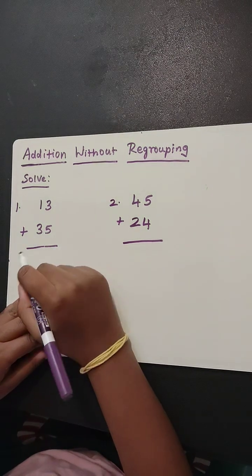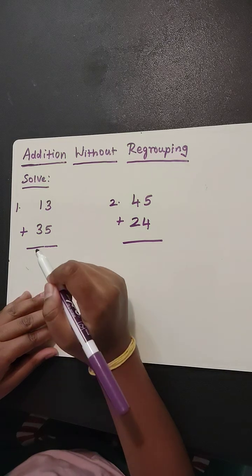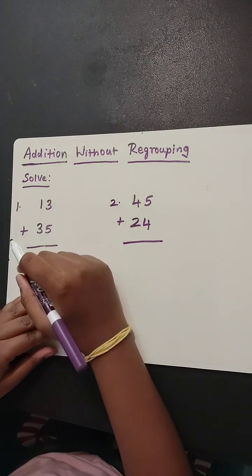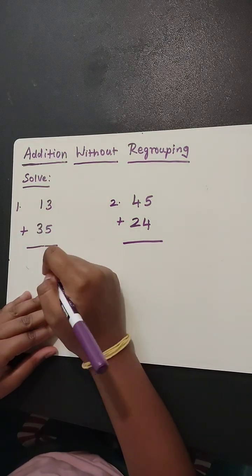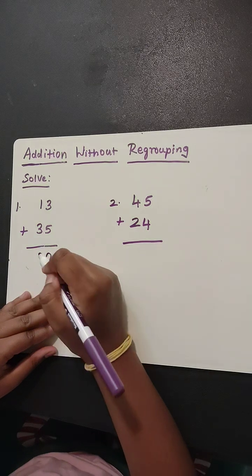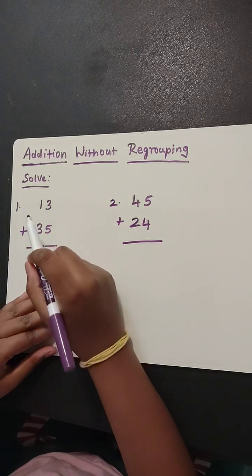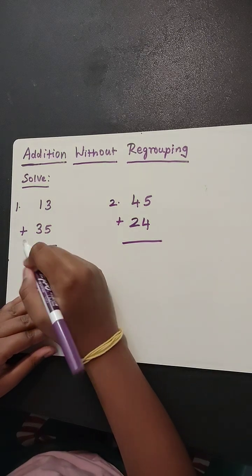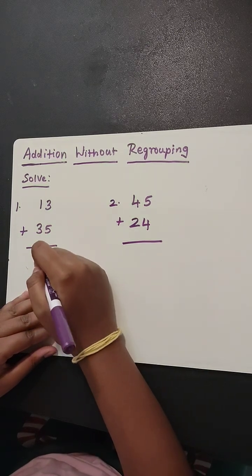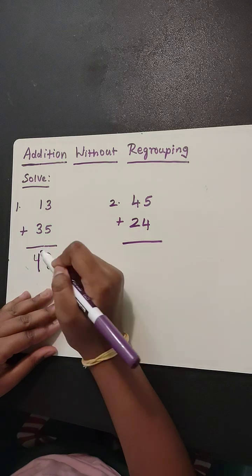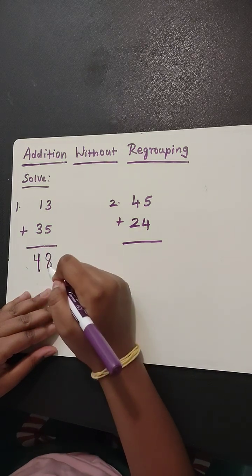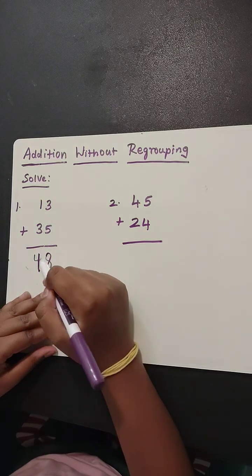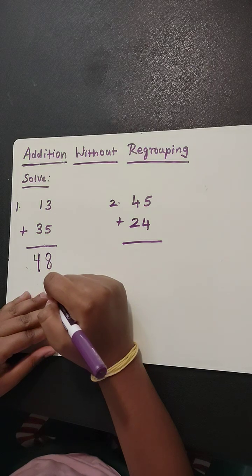13 plus 35. Add the ones place: 3 plus 5 equals 8. Add the tens place: 1 plus 3 equals 4. The answer is 48. 13 plus 35 equals 48.